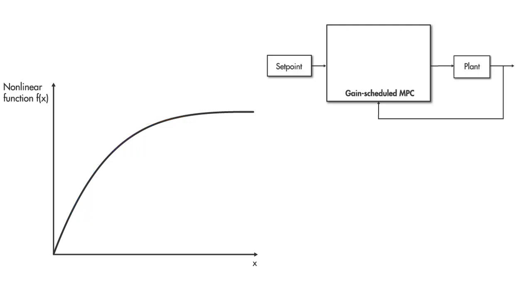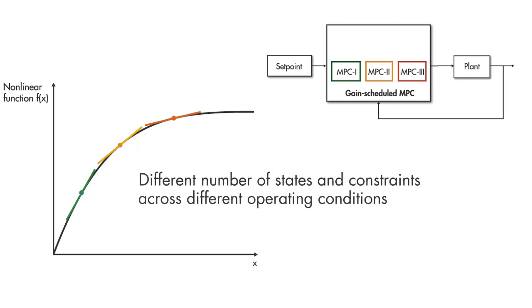In gain-scheduled MPC, you linearize offline at the operating points of interest and for each operating point, you design a linear MPC controller. Each controller is independent from each other and therefore may have a different number of states and different number of constraints.